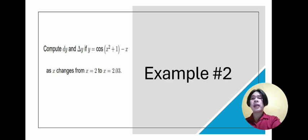Compute dy and Δy if y equals cos(x² + 1) - x, as x changes from x = 2 to x = 2.03.